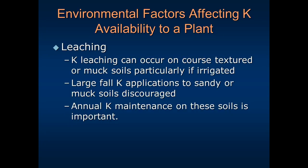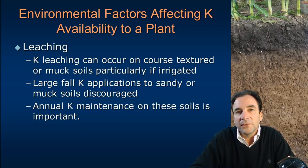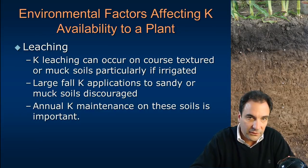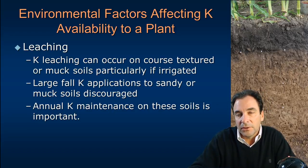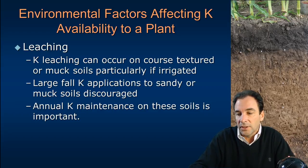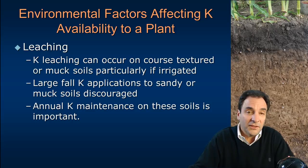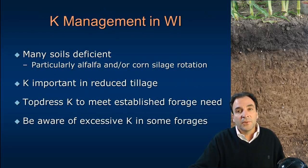Potassium leaching can occur on our coarse textured sandy soils and our mucky or organic soils, particularly if irrigated. Large fall applications of potassium to sandy or organic soils are discouraged — just like nitrogen, chances are we'll leach or move that potassium through the soil profile and out of the root zone, so it won't be there in spring when crops need it. On sandy and organic soils, annual applications of potassium are important, and we need to monitor soil test potassium levels more closely and more often on these soils.